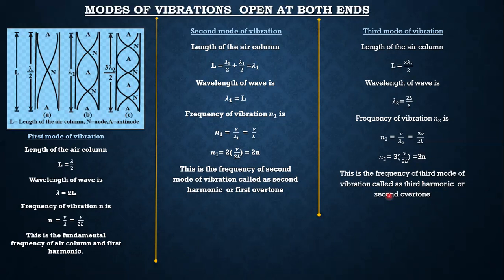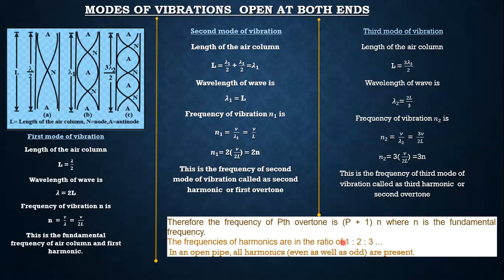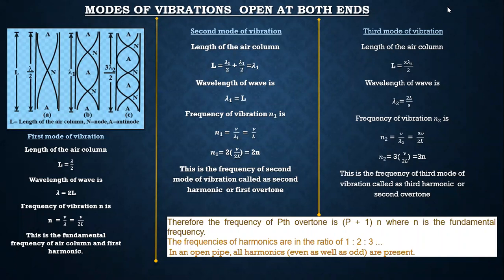In general, the frequency of the pth overtone is (p+1) times n, where n is the fundamental frequency. For the first overtone it is 2n, for the second overtone it is 3n. The frequencies of harmonics are in the ratio 1 : 2 : 3 : 4 : 5 : 6 and so on. In an open pipe, all harmonics — both even and odd — are present.